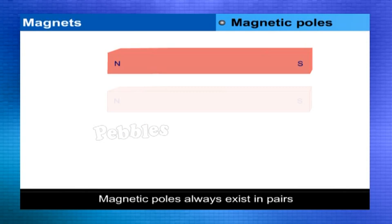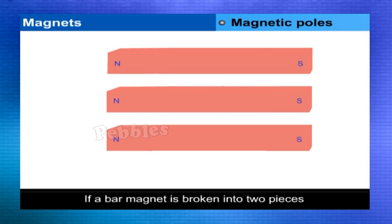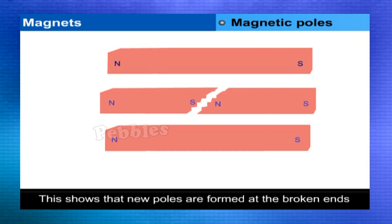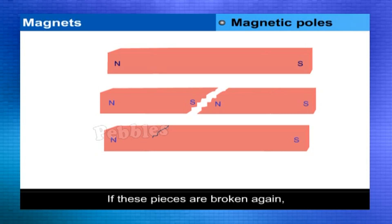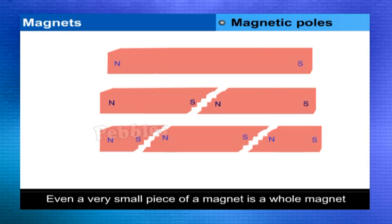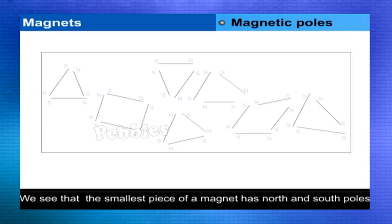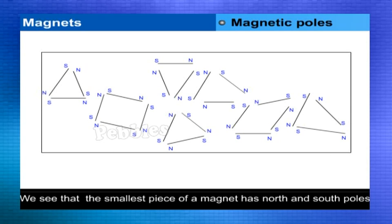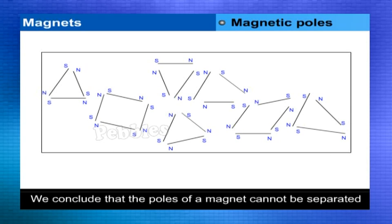Magnetic poles always exist in pairs. If a bar magnet is broken into two pieces, each piece behaves as a whole magnet with new poles formed at the broken ends. If these pieces are broken again, each smaller piece still remains a whole magnet with two opposite poles. Even the smallest piece of a magnet has North and South poles, and we cannot separate the two poles.